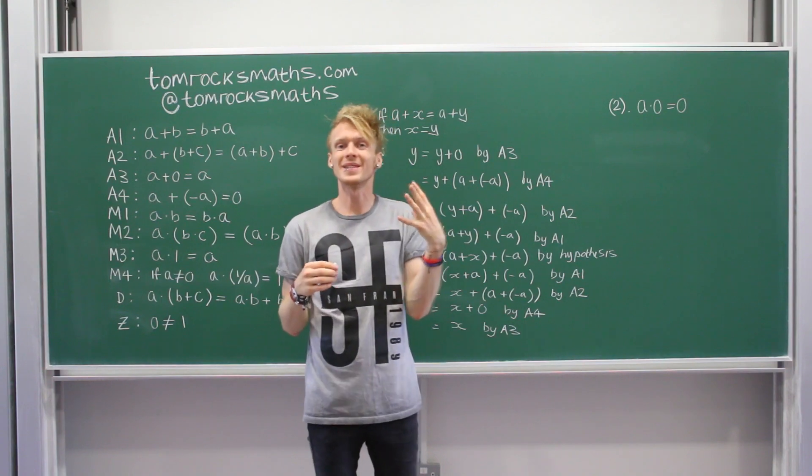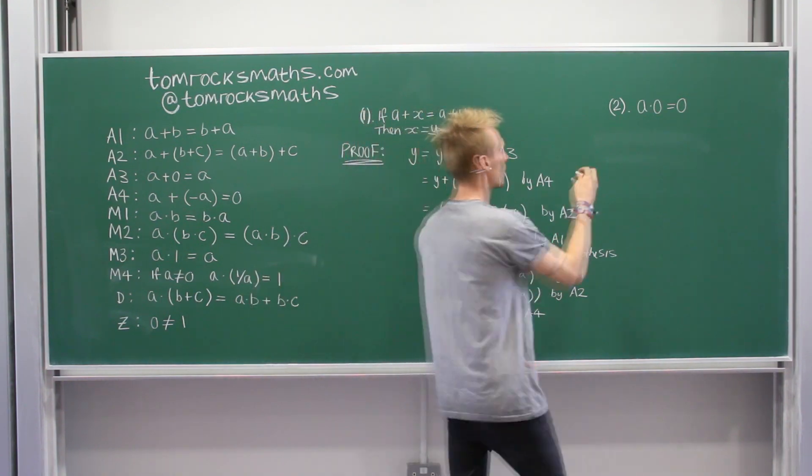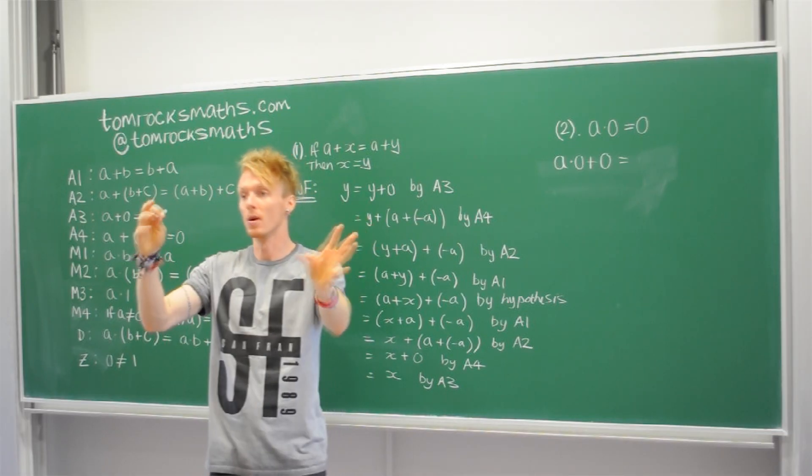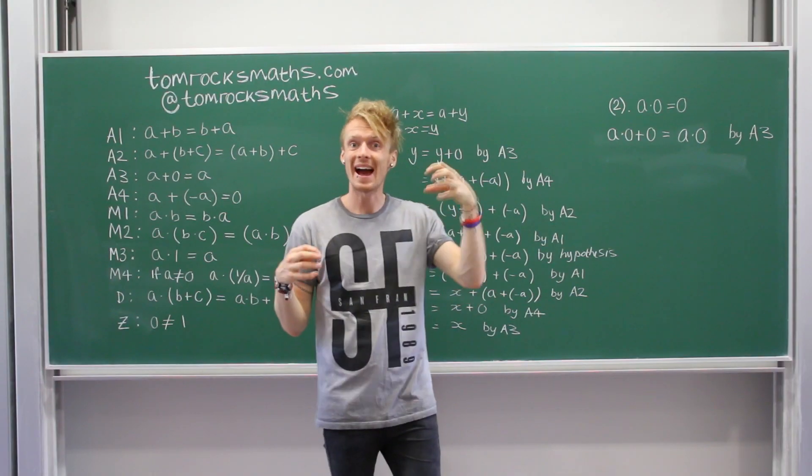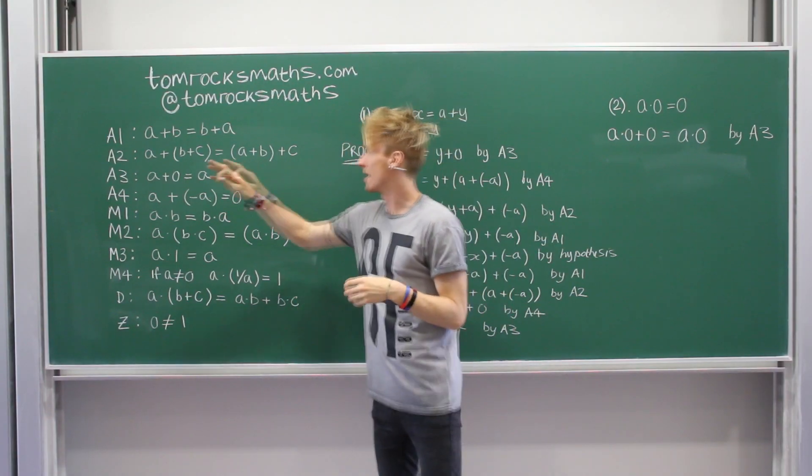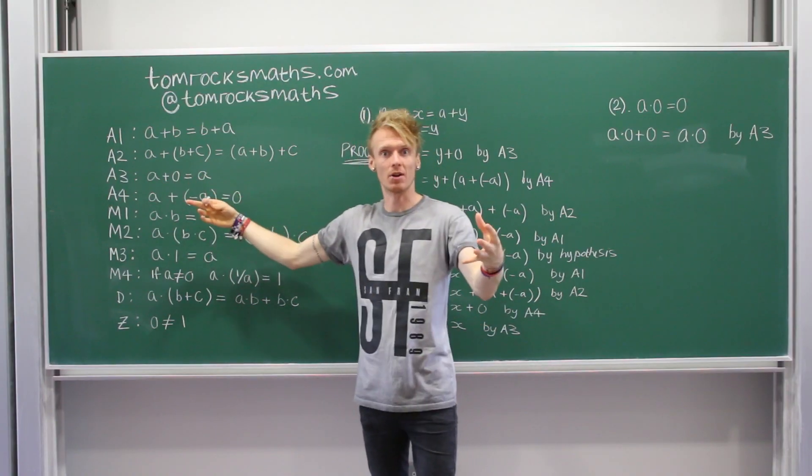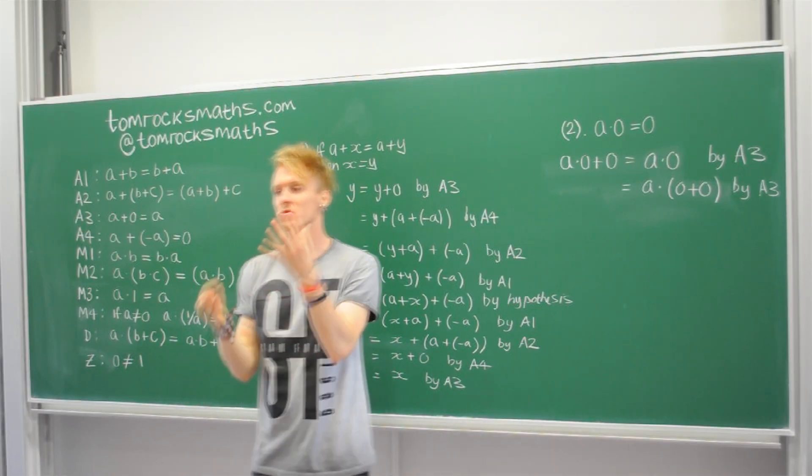So to start with, what we're going to do is consider a times 0 plus 0. And now using axiom A3, we know that a number plus 0 is just that number. And now what we're going to do is use A3 again, because a number plus 0 is that number. So what if a here is just 0? So 0 is equal to 0 plus 0.